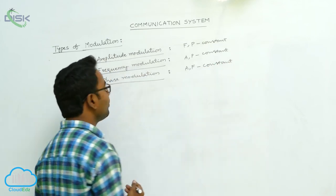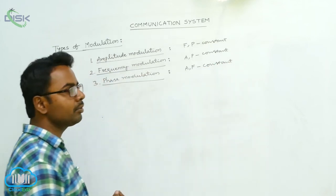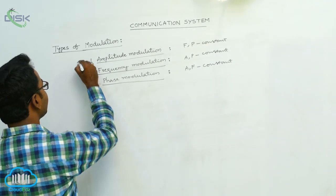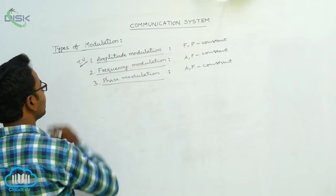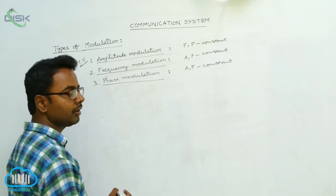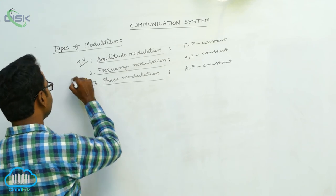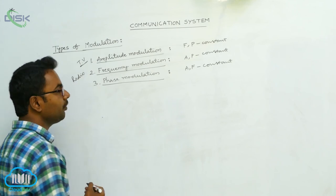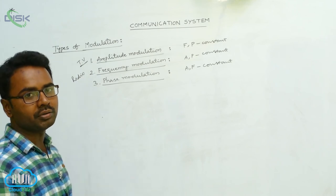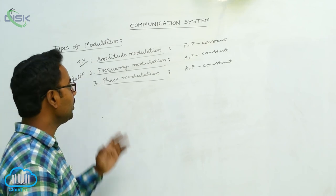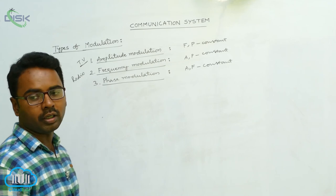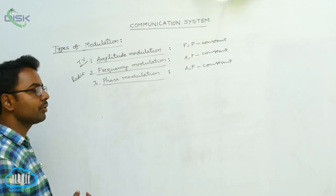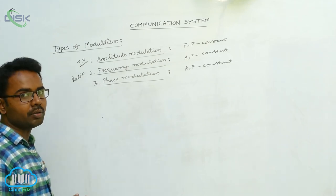Amplitude modulation is basically used for television communication. For television communication mostly we use amplitude modulation, and for radio communication we usually use frequency modulation.